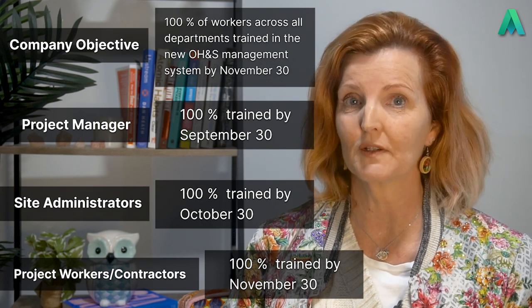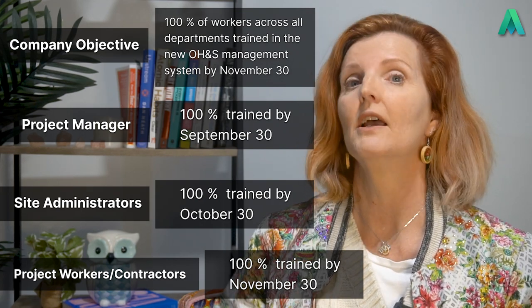So as an example, if one of the company's OH&S objectives is to have 100% of workers across all departments trained in the new OH&S management system by November 30th, there would be several departments or functions that would also require objectives set to be able to meet this objective. Each department could then set their own objectives to ensure their team was trained by the November 30th deadline.